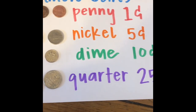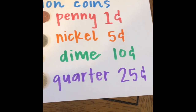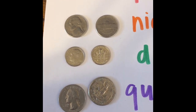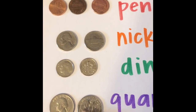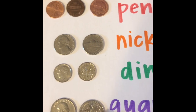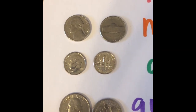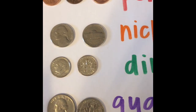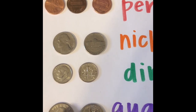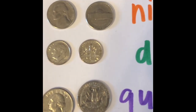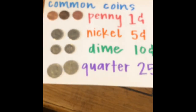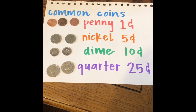Last but not least with our common coins, we have our quarter, which is our largest common coin and worth the most. A quarter is a quarter of a dollar — 25 cents. We need four quarters to make a dollar. On the front of our quarter we have George Washington, also with a big white wig and ponytail, with 'Liberty' displayed. On the back we have our bald eagle spreading his wings and it says 'United States of America, Quarter Dollar.'